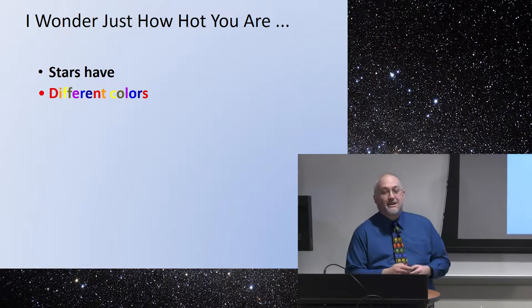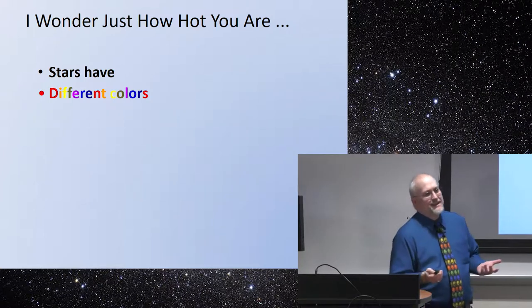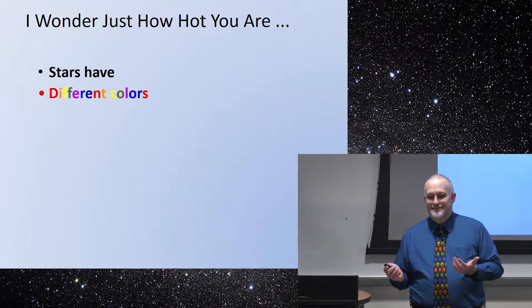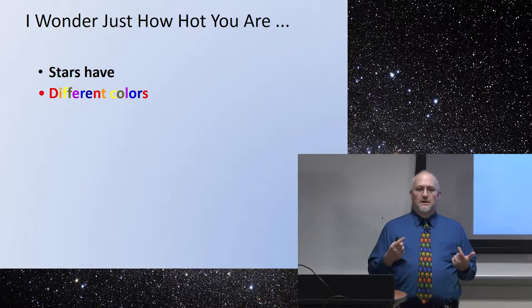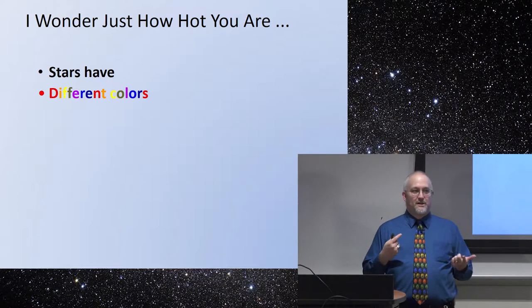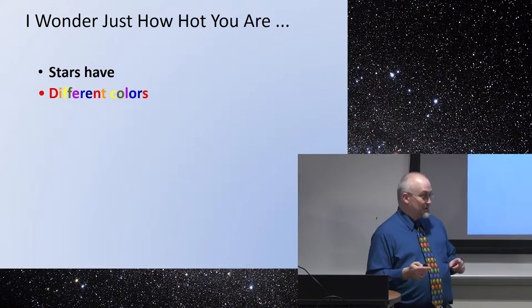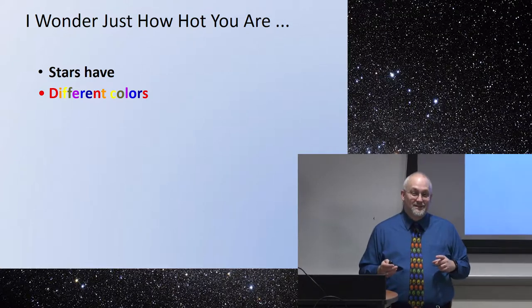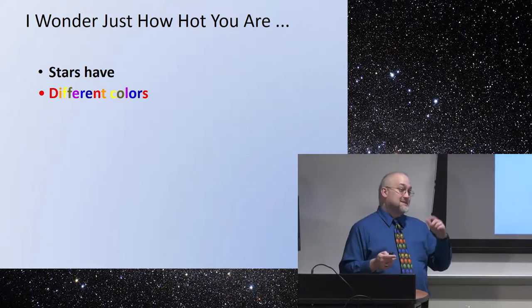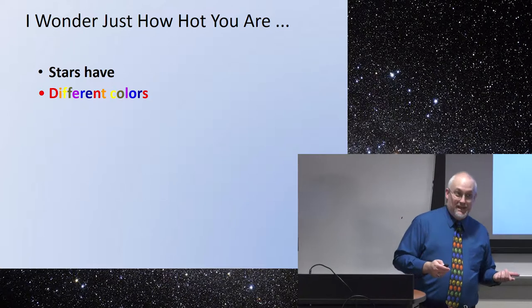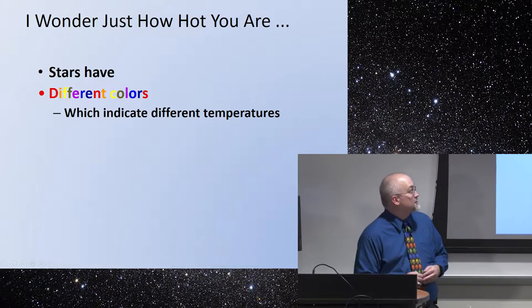So stars have different colors. Why do they have different colors? There's a hint on the screen already. All of my talks are audience participation, so if somebody doesn't say something, I'm just going to stare at you for a minute. It does have to do somewhat with what they burn — how hot they burn. It's the temperature that actually helps determine the color, but the temperature is determined by what's burning at the time. So our different colors do indicate different temperatures.